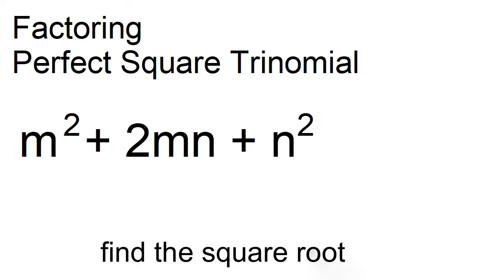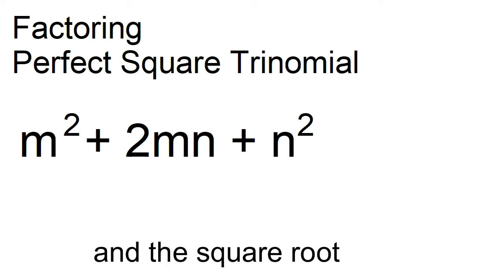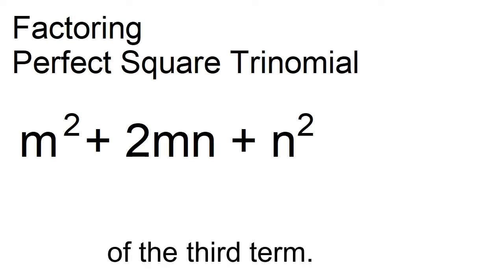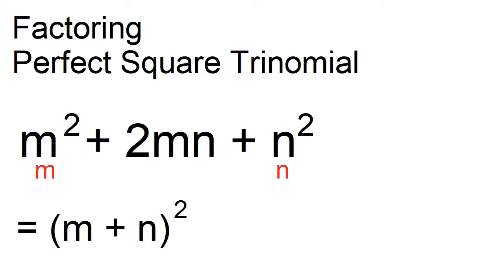To factor a perfect square trinomial, find the square root of the first term and the square root of the third term. The square root of m squared is m, and the square root of n squared is n. Therefore, m squared plus 2mn plus n squared is equal to the square of the quantity m plus n.